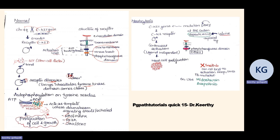When you don't have the growth factor, this signaling does not occur. In mastocytosis, there is a point mutation at codon 816 of the C-kit gene, where aspartic acid is replaced by valine — the D816V mutation. Because of this, the phosphoryltransferase domain is mutated, so without activating the receptor, it continuously becomes active, leading to excessive proliferation and activation of all downstream pathways, causing mastocytosis.